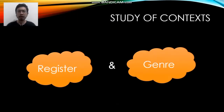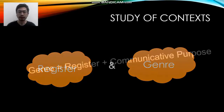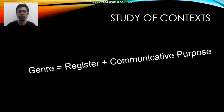Context in functional grammar is analyzed through register and genre. So the terms register and genre are used to study context. Genre is register plus communicative purpose.